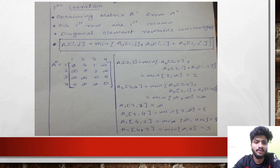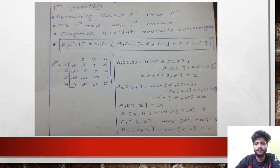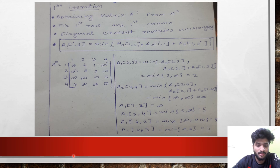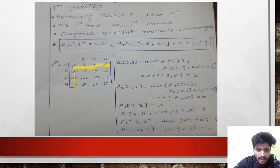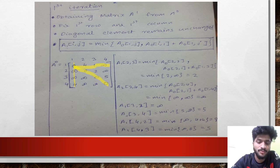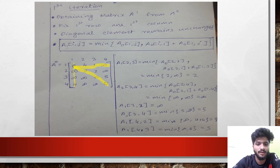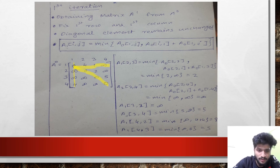After finding the distance matrix, we perform the first iteration. Since this graph has 4 vertices, we will perform 4 iterations. In the first iteration we obtain matrix A1 from distance matrix A0 by fixing the first row and first column and keeping the diagonal elements unchanged. All remaining elements are updated using the formula: A1[i,j] = minimum of A0[i,j] and A0[i,1] + A0[1,j].